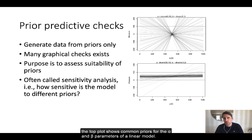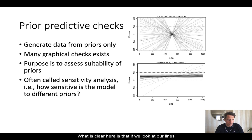So if you look at the two plots to the right, the top plot shows common priors for the alpha and beta parameters of a linear model, while the bottom plot shows priors that are more specific, you could say. What is clear here is that if we look at our lines in the top plot, you could see that it's like a sun. They are all over the place.